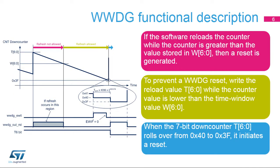This diagram illustrates how the window watchdog operates. When the 7-bit down-counter rolls over from 0x40 to 0x3F, it initiates a reset. This happens if the application software does not refresh the window watchdog on time. The early interrupt, if enabled, can be generated when the down-counter reaches 0x40. If the software refreshes the watchdog while the down-counter is greater than the value stored in bits W[6:0], a reset is generated. This happens when the application refreshes the watchdog too early.